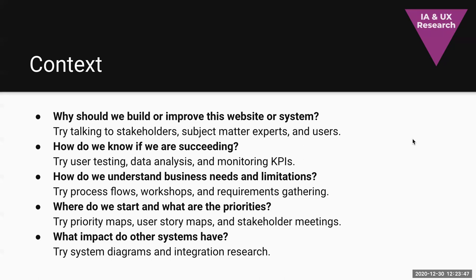How do we understand business needs and limitations? Try a process flow, workshops, and requirements gathering. Understand what an organization's purpose is — what is their mission? Get to the root cause and understand limits: How much time do you have? What is the budget? What happens if you can't meet that? Those are questions you need to know before you start. Where do you start and what are the priorities? Try priority mapping, user story mapping, and stakeholder meetings — gather that information early. What impact do other systems have? Try system diagrams and integration research. Get a lay of the land. It's okay not to be completely comprehensive, but if you don't start somewhere, you're flying blind.